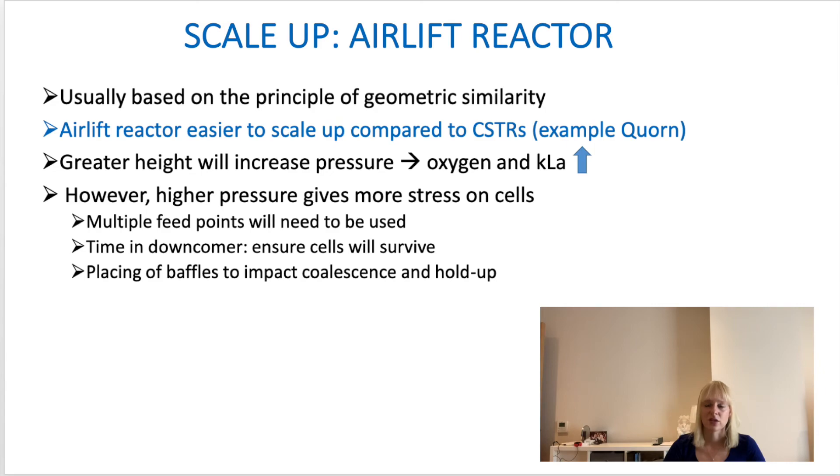Ways of combating this include using multiple feed points, where gas enters the reactor at various points, and placing baffles to impact coalescence and gas holdup. You also need to consider whether the cells are capable of dealing with the stress placed on them. Multiple feed points help reduce this stress, and the choice of cell type matters — some cells may handle these conditions better than others.